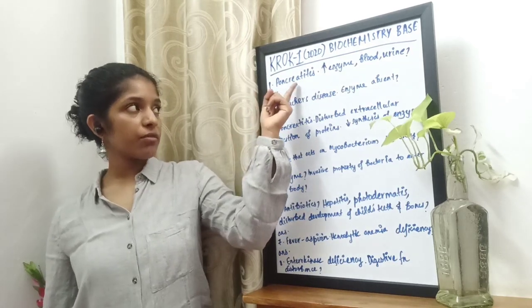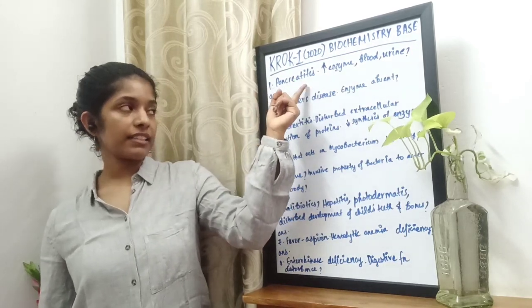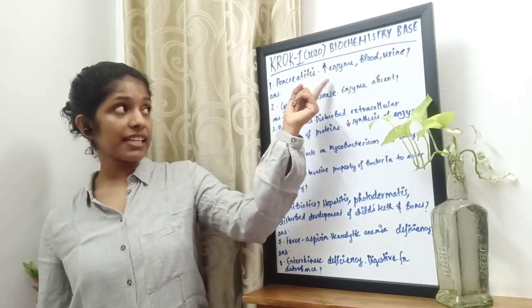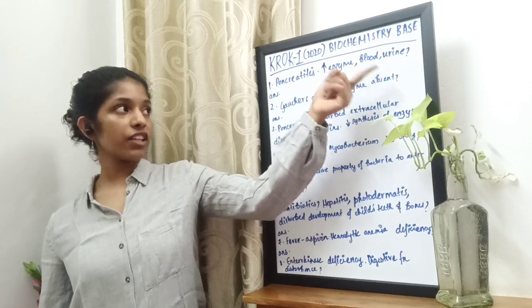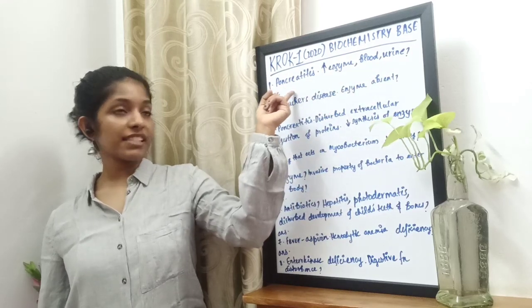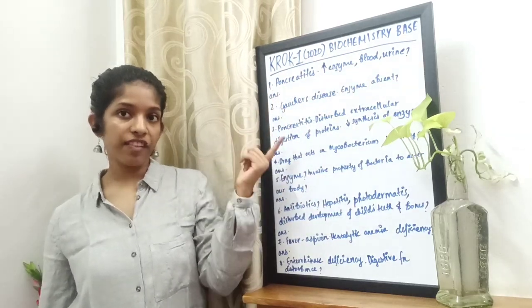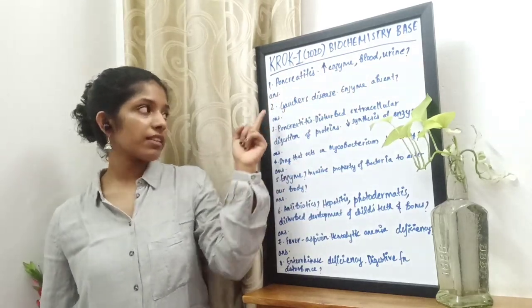A patient comes to you with pancreatitis and he has increased enzyme activity in the blood and urine. Which enzyme causes this? The answer is alpha amylase.